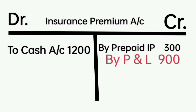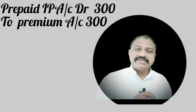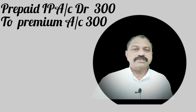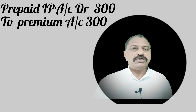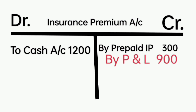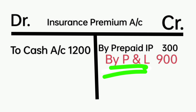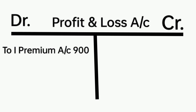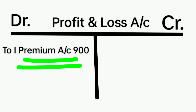Therefore, on the debit side of the insurance premium account it is written as: to cash account Rs.1,200. Then see the adjusting entry. The adjusting entry for prepaid insurance premium of Rs.300 is: prepaid insurance premium account debit Rs.300 to insurance premium account Rs.300. Therefore, on the credit side of the insurance premium account it is written as: by prepaid insurance premium account Rs.300. Then the net insurance premium of the current year — Rs.900 — has been transferred to the Profit and Loss account. This net insurance premium Rs.900 will appear on the debit side of the Profit and Loss account.